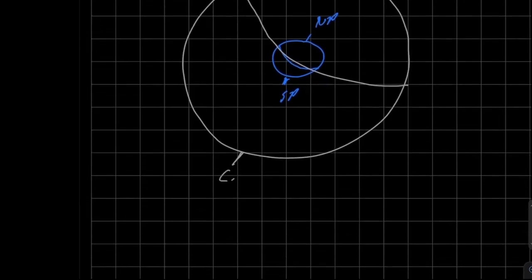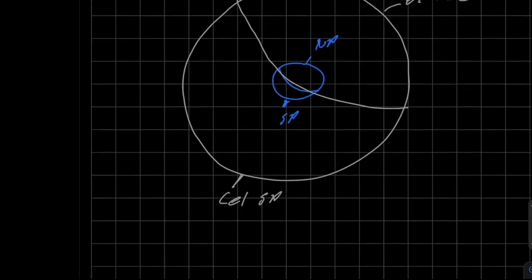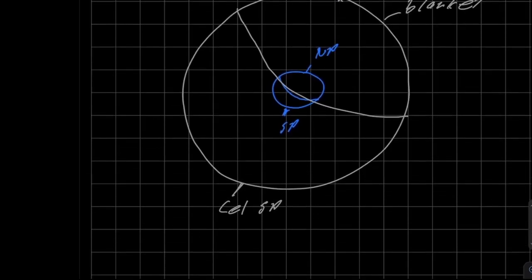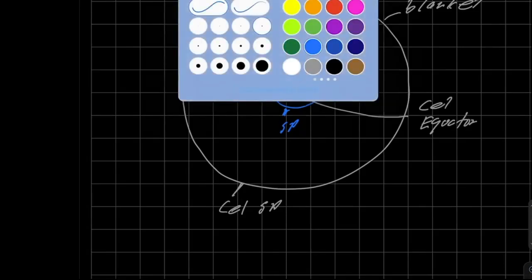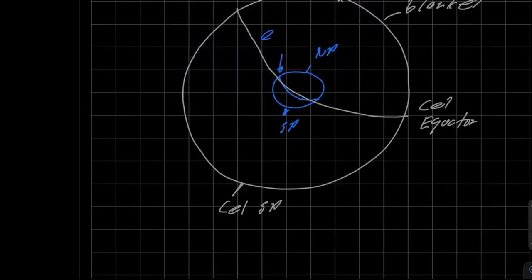And this one down here is going to be called the celestial south pole. And guess what, this line right here is going to be called the celestial equator, just like this blue line in here on the earth is what we know as our actual equator, that the sun passes over twice a year, right?